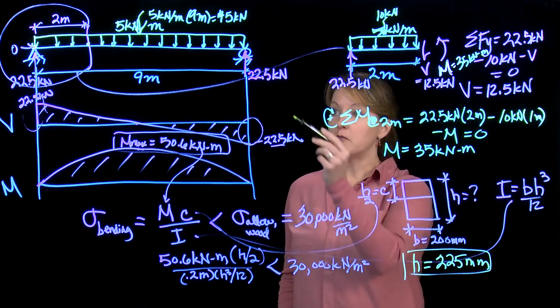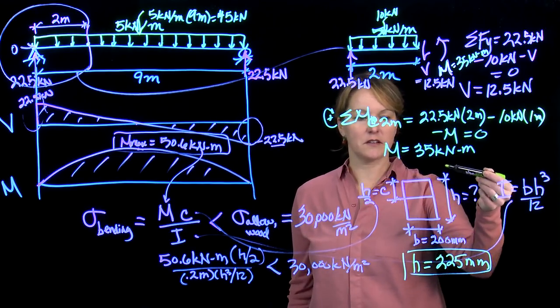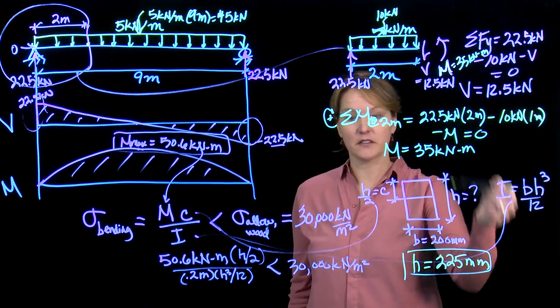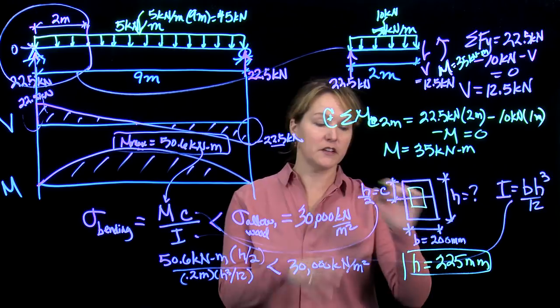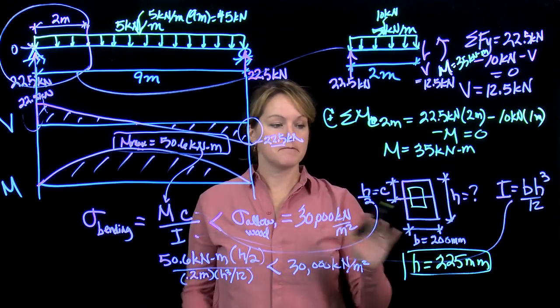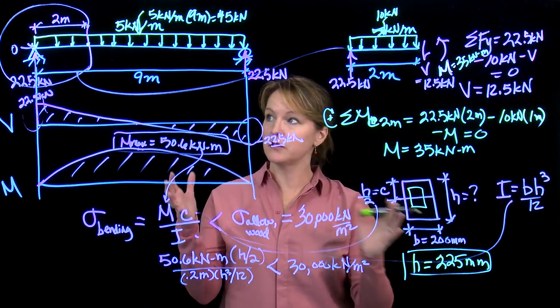So if Owl wants to use a beam instead of a truss, she needs a cross section that is 200 millimeters wide by 225 millimeters high, if she wants to use a rectangular cross section. We can also look at hollow sections eventually or I-beams. That's something an engineer would play with, different dimensions and shapes. But this is how you design a beam.